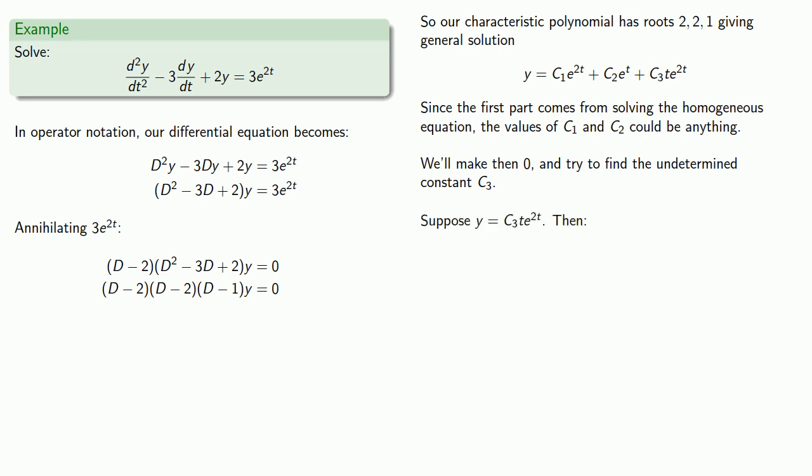So suppose y is c₃te^(2t). We'll substitute that into our original differential equation, which means we need 2y, minus 3(dy/dt), and a second derivative of y (d²y/dt²).